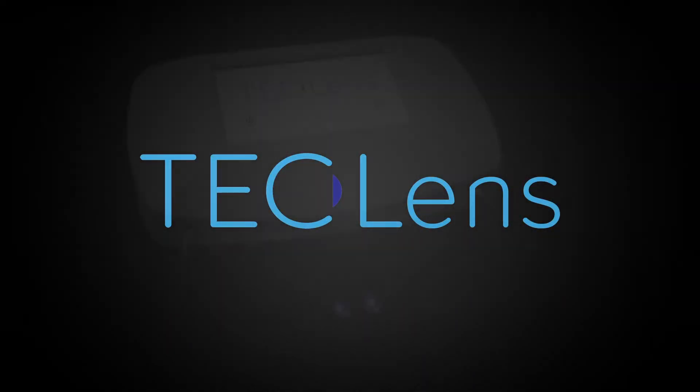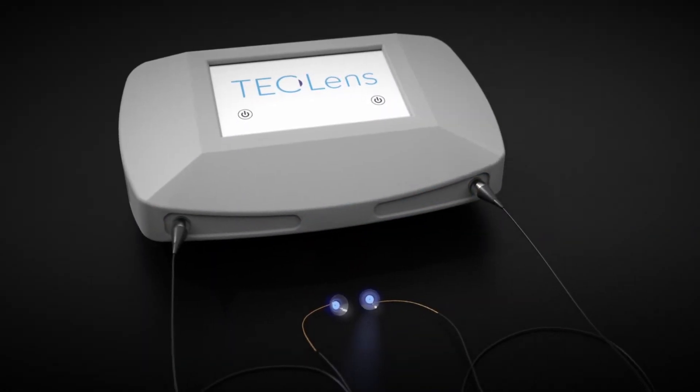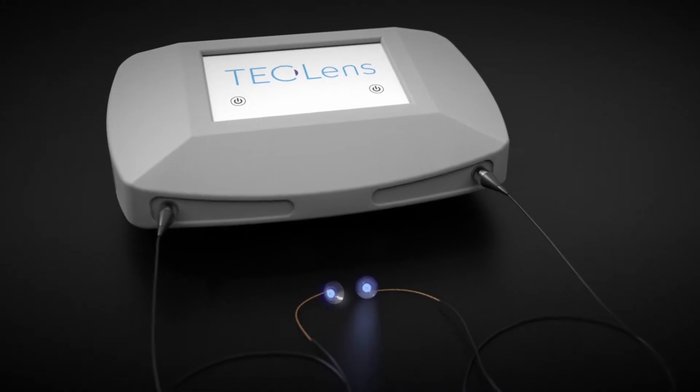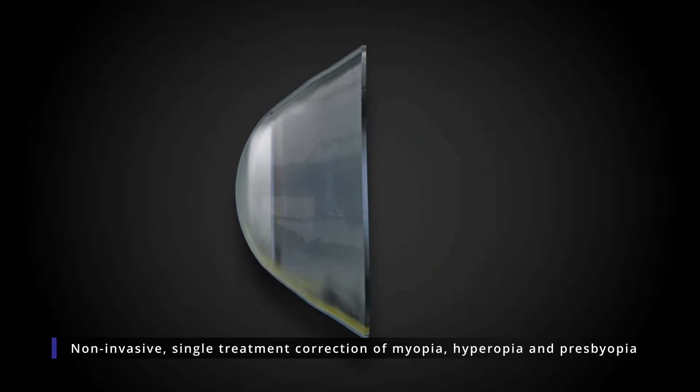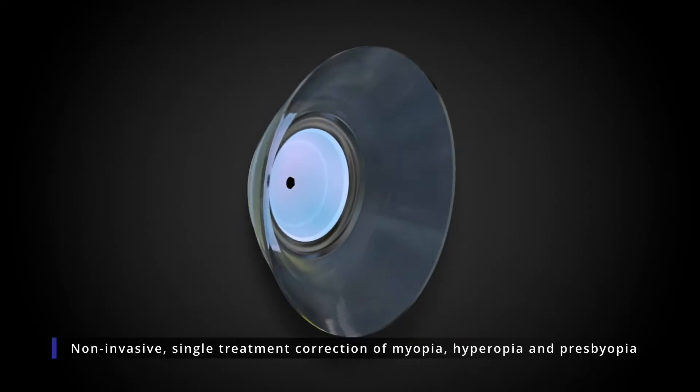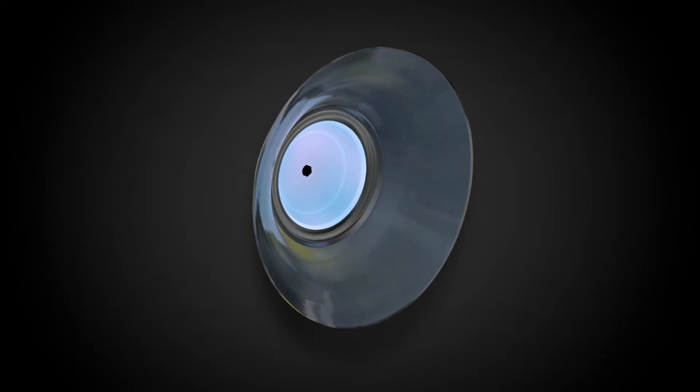TechLens has developed a non-invasive single treatment that uses light to gently strengthen and reshape your cornea, correcting nearsightedness, farsightedness, and the need for reading glasses as you get older, all without cutting or ablation.